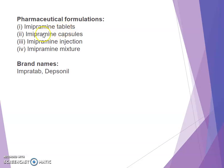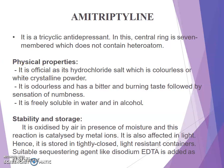Imipramine is also used for catalepsy and allergic conjunctivitis due to its topical antihistaminic property. Pharmaceutical formulations available include imipramine tablet, capsule, injection, and mixture. Brand names are Imipratab and Depsonil.